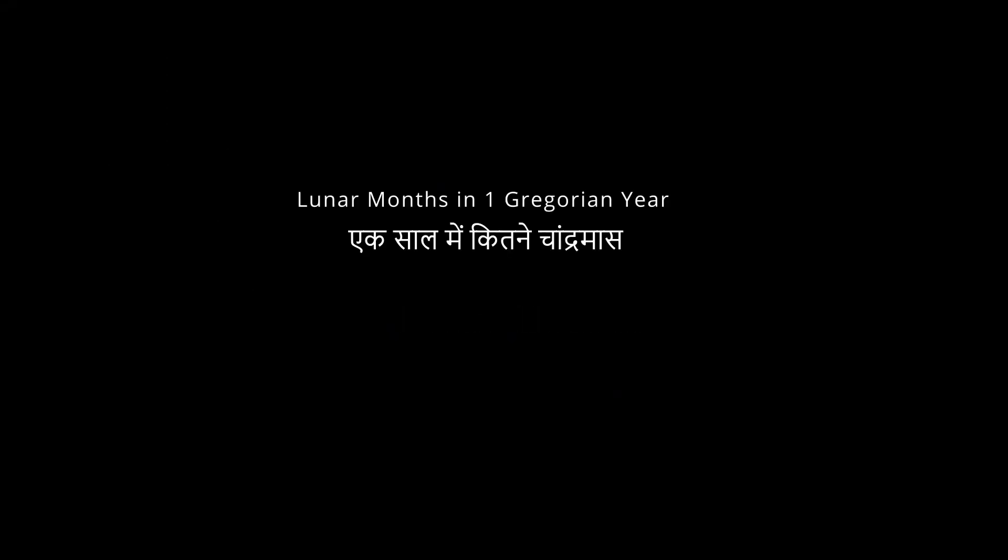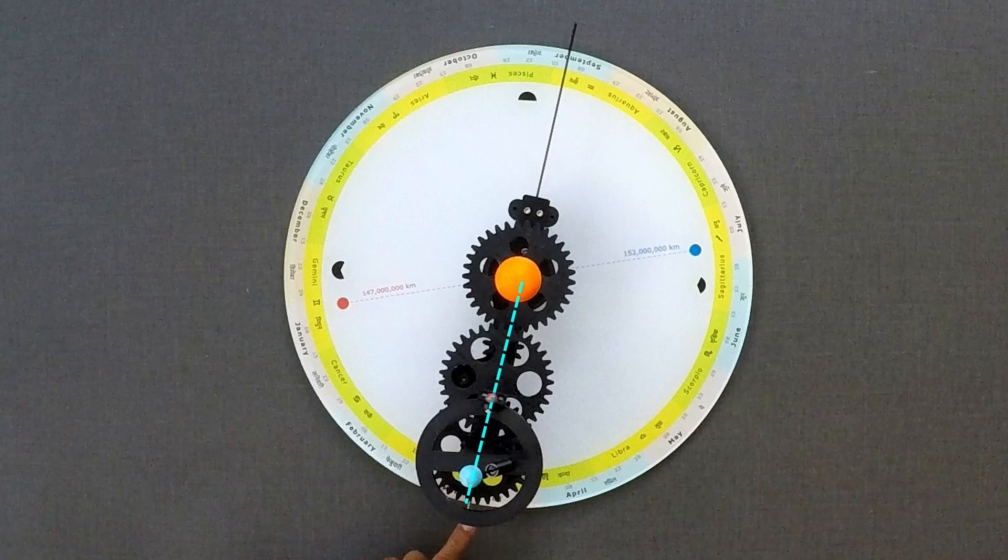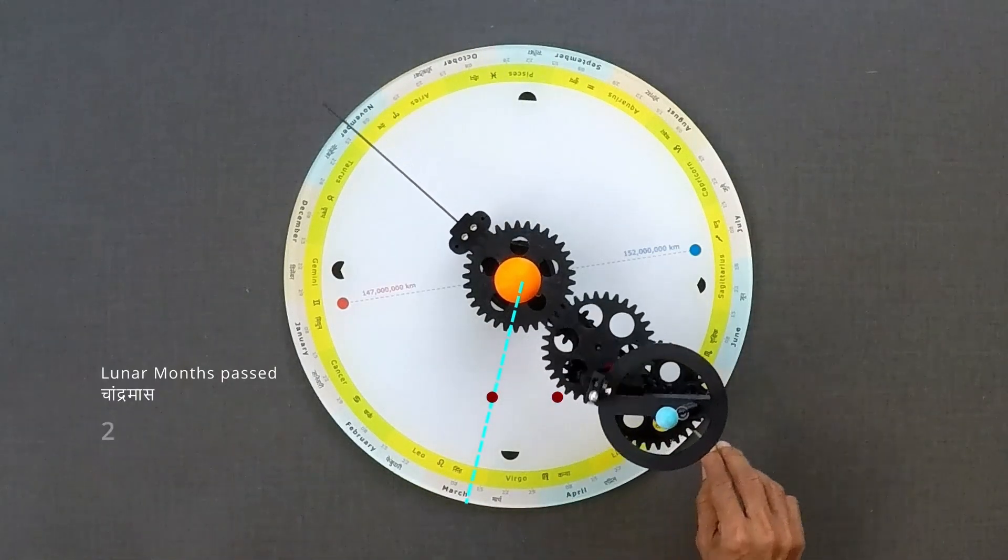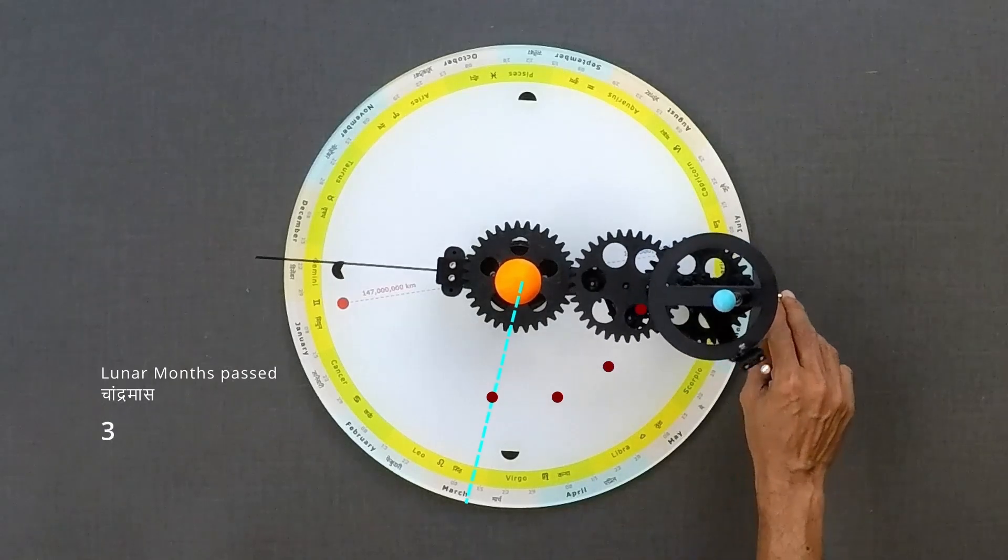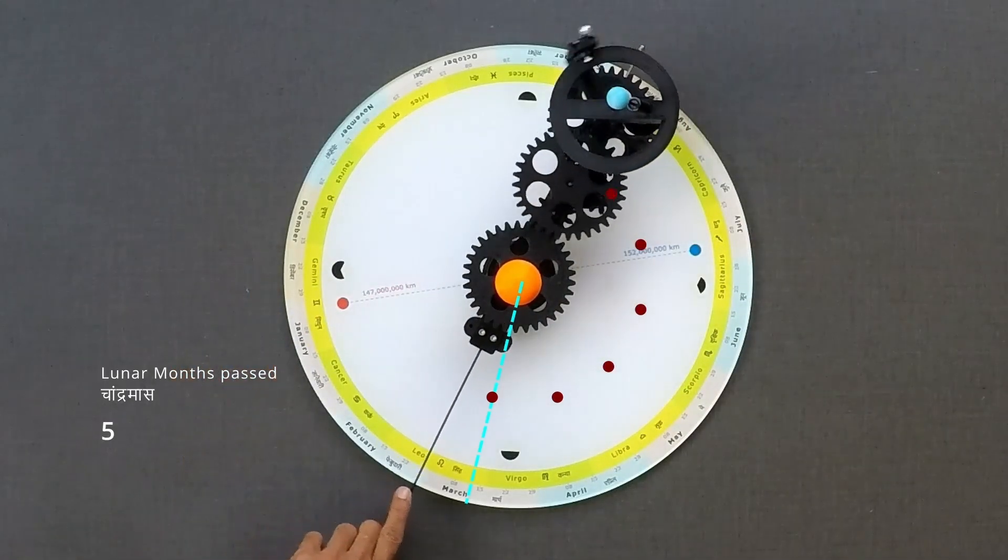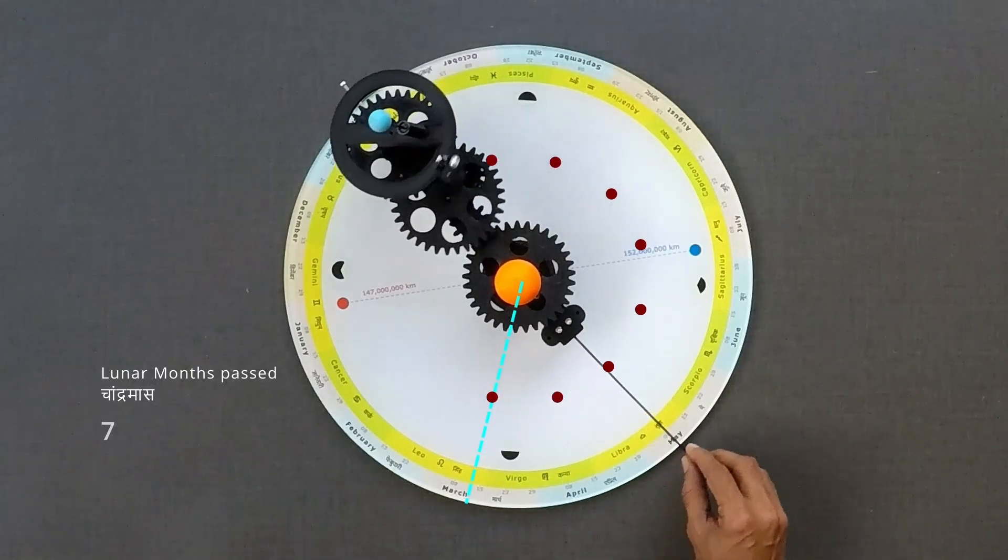In any one calendar year, there are 12 or sometimes 13 lunar months. That means 12 or 13 Full Moon Days. Time between Amavasya to the next Amavasya. This could be the reason we have 12 months in the Gregorian calendar as well.